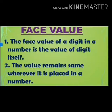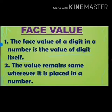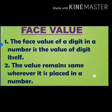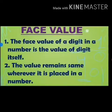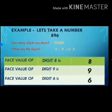Let's start with the definition. What is face value? The face value of a digit in a number is the value of the digit itself. Or we can say the value remains the same wherever it is placed in a number. For example, in 101: here 1 is at the 1's place, its face value is 1. And this 1 is at the 100's place, but still its face value will remain the same — that is 1.